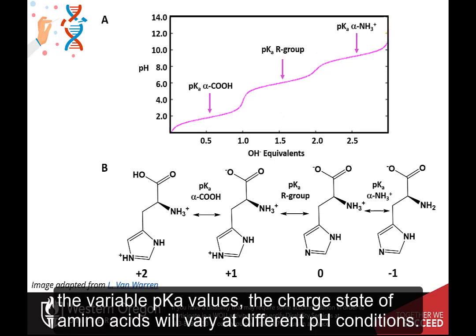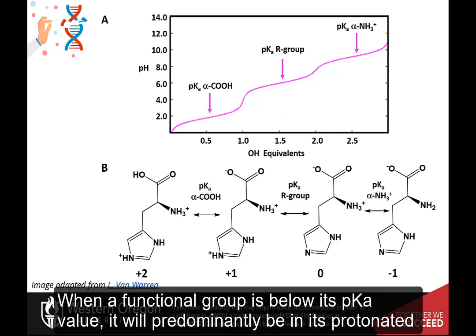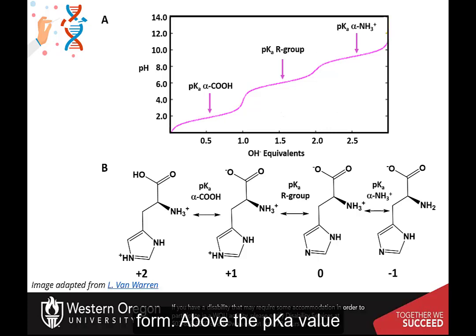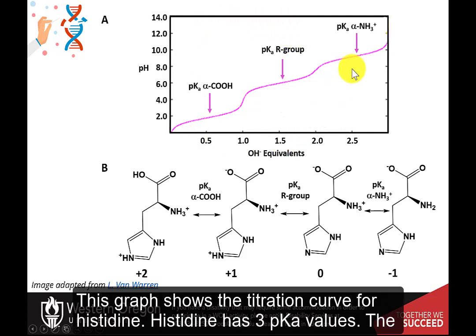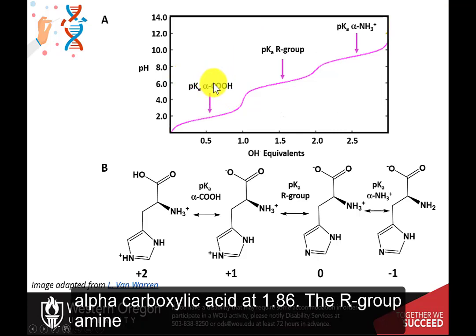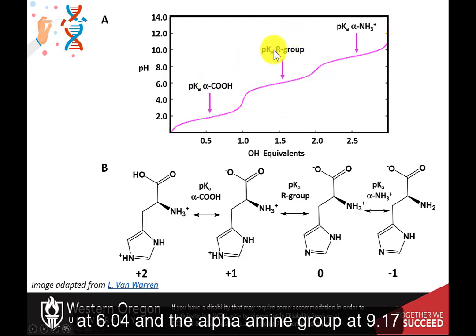Due to the variable pKa values, the charged state of amino acids will vary at different pH conditions. When a functional group is below its pKa value, it will predominantly be in its protonated form. Above the pKa value, it will predominantly be in the deprotonated form. This graph shows the titration curve for histidine. Histidine has three pKa values: the alpha carboxylic acid at 1.86, the R group amine at 6.04, and the alpha amine group at 9.17.